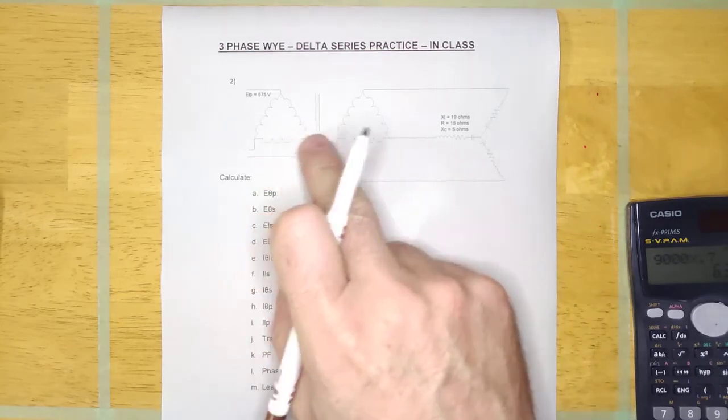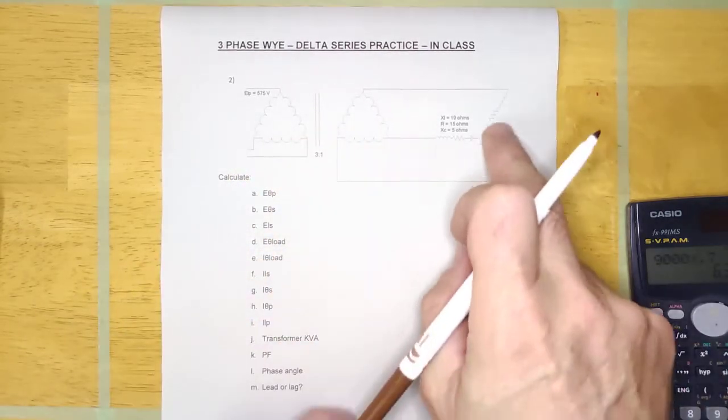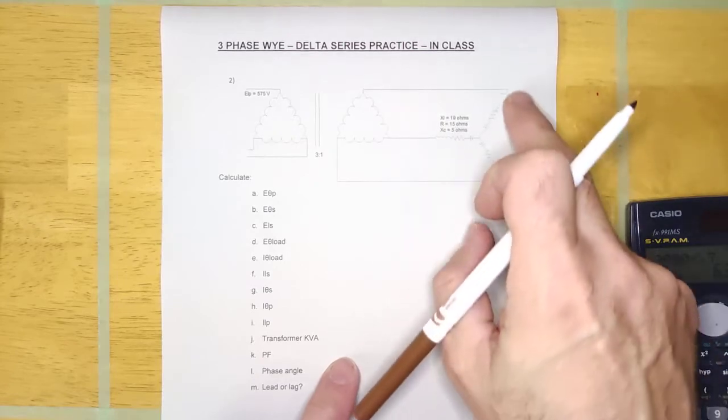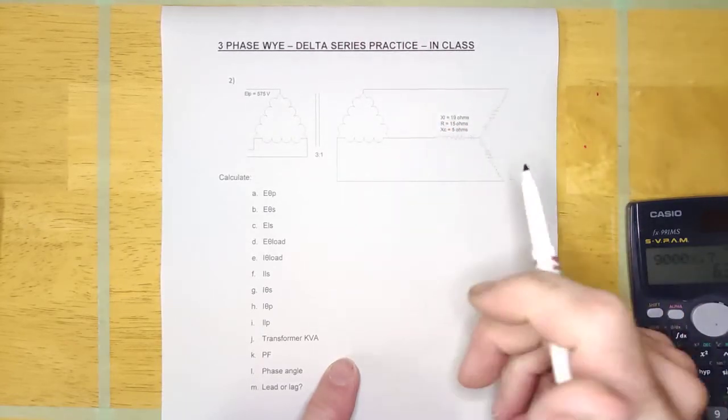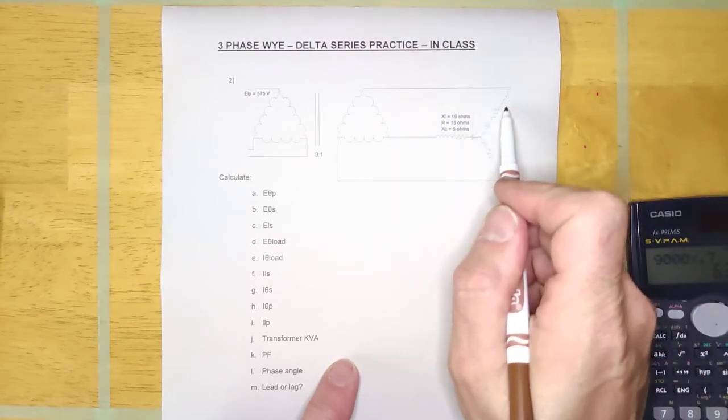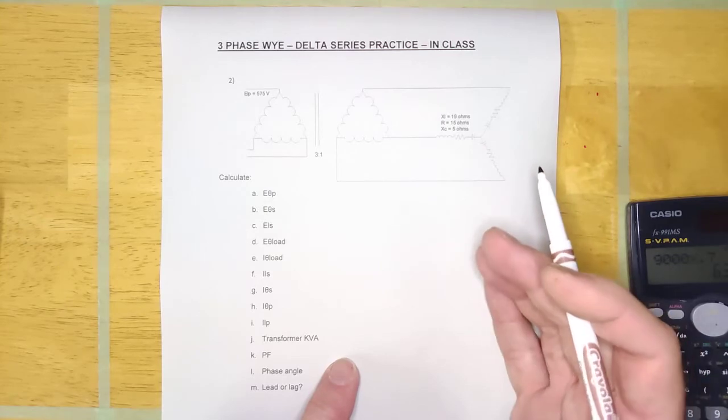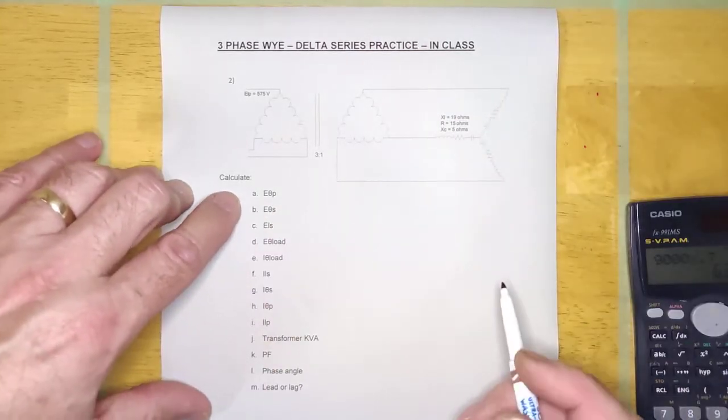It's a little bit different. You'll notice that it, again, happens to be a delta-delta transformer feeding this Y load. But this time, instead of a random box here that shows a load, it's got an RL series circuit as the 3 phase load. So I hope you guys can see it. I know it's small, but hopefully you have your book in front of you.